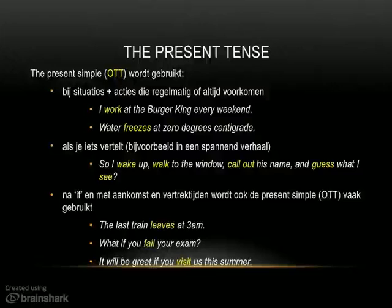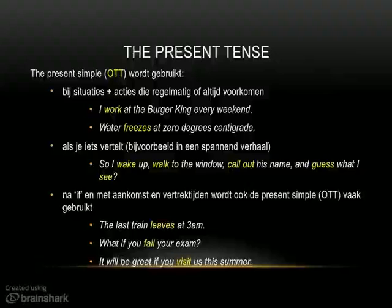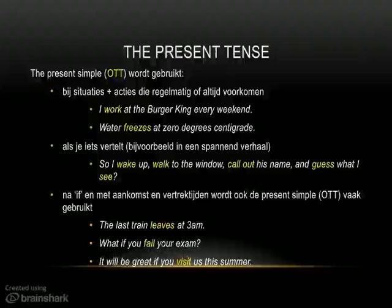You use the present tense for situations and actions which happen regularly or always. For example, I work at the Burger King every weekend — that is an action that is regular and always happens. It implies that you always work at the Burger King. Something that always happens is that water freezes at zero degrees centigrade, so then you would use the present tense.